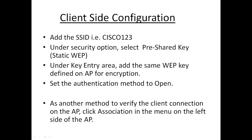Now let's see the client-side configuration. We may be using different clients on different machines, so we need to add the SSID as Cisco123 on the client machine. Under the security option, select the pre-shared key as Static WEP. In the key entry area, add the same WEP key configured on the access point for encryption. Set the authentication method to Open and the client should connect. We can verify the client connection to the access point by clicking on Association in the left-side menu of the access point.